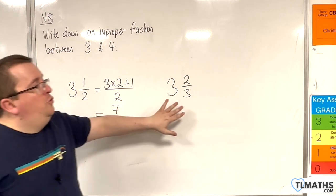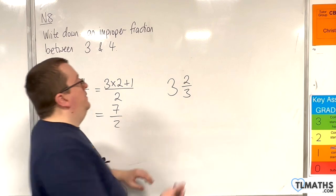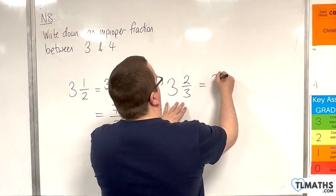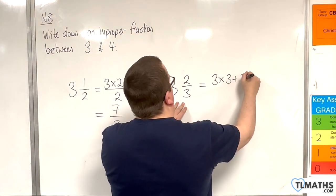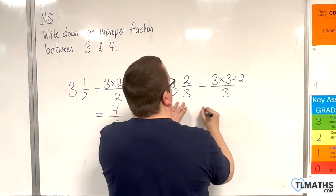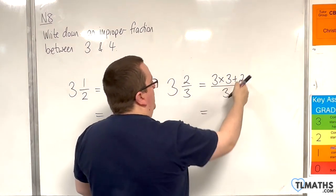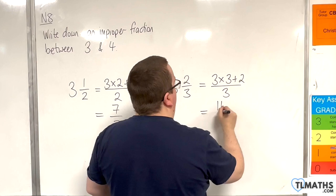If you chose 3 and 2 thirds, then that would be 3 times 3 plus 2 over 3. That's 9 plus 2, which is 11, so 11 thirds.